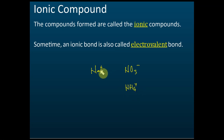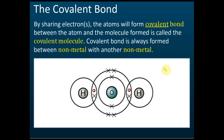Covalent bonds form between non-metal and non-metal, and the bond is produced by sharing of electrons. For example, hydrogen has only one electron; when it shares with oxygen, it has two. Oxygen has six electrons — when it shares with two hydrogen atoms, it gains two more electrons and becomes octet. Once octet is achieved, it won't share anymore.